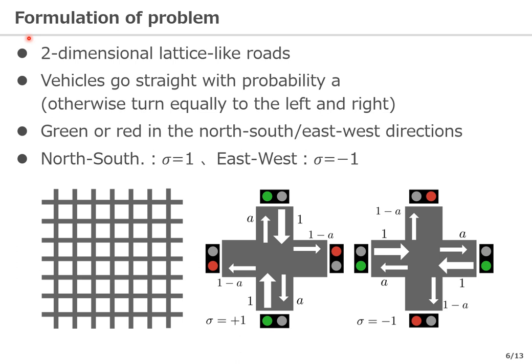This is the formulation of the basic problem, and I will introduce some notations for explanation. For simplicity, we consider a two-dimensional lattice-like road arranged vertically and horizontally. All vehicles running on the road have a certain probability of going straight, denoted by A; otherwise, the vehicles turn left or right. We assume two states of the traffic light: in one state, a traffic light allows vehicles to move only in the north-to-south direction, and in the other state, they move in the east-to-west direction. If a car moves north to south, the value of sigma takes 1; and in the east-to-west direction, sigma is minus 1.